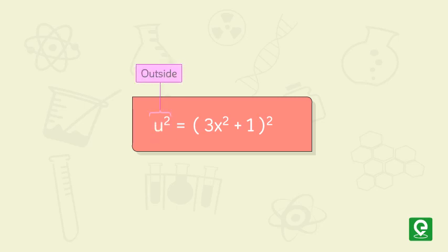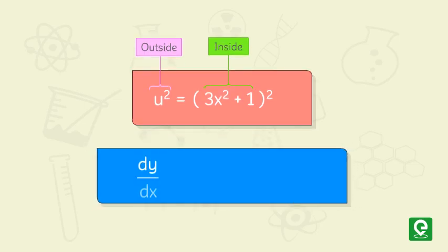dy/dx is equal to 2u times d/dx of (3x² + 1). Hence derivative of y is equal to 2 times (3x² + 1) times 6x.